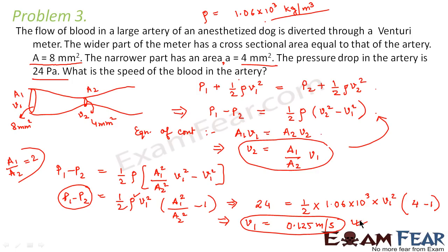I hope the concepts of the Venturi meter, Torricelli's law, the equation of continuity, and Bernoulli's equation are all getting clearer, and you can understand how each of them is related to the others — how you apply Bernoulli's equation in a Venturi meter, and how you apply the equation of continuity alongside Bernoulli's equation. All these things should be clear.